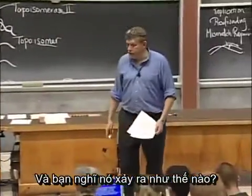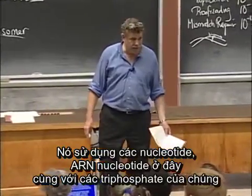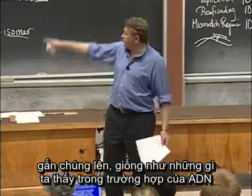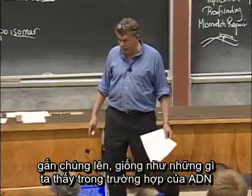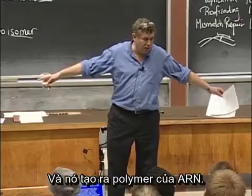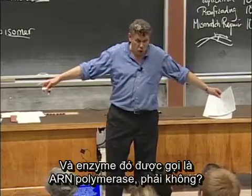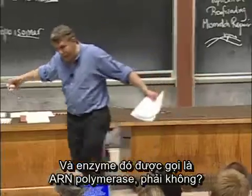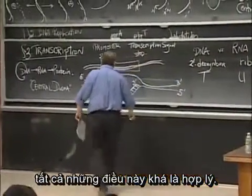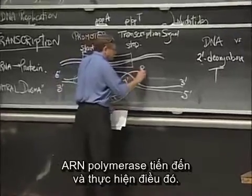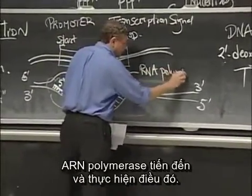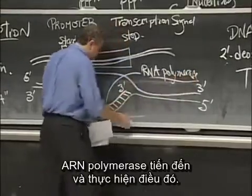And how do you think this works? It takes RNA nucleotides with their triphosphates and sticks them on just like we saw with DNA, and it makes a polymer of RNA. The enzyme is called RNA polymerase. This is all pretty logical stuff — RNA polymerase comes along and does that.